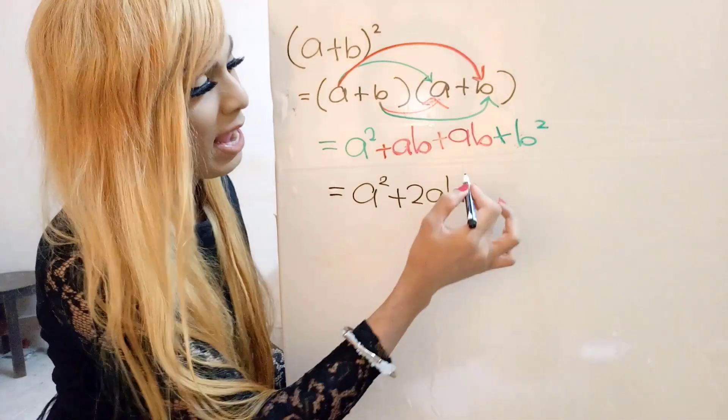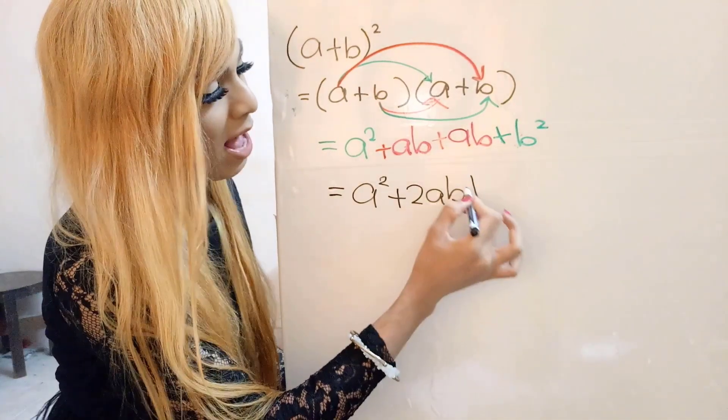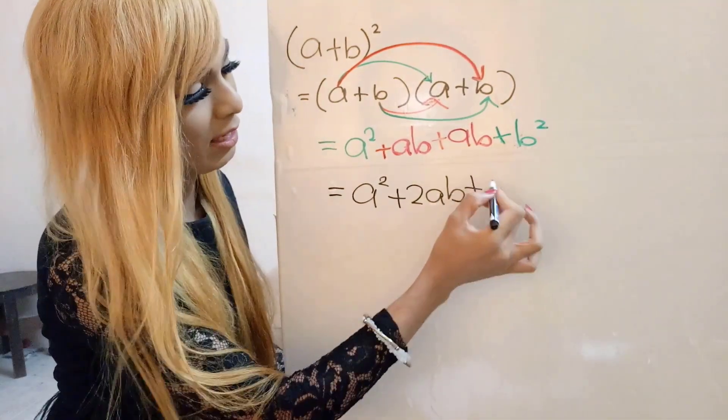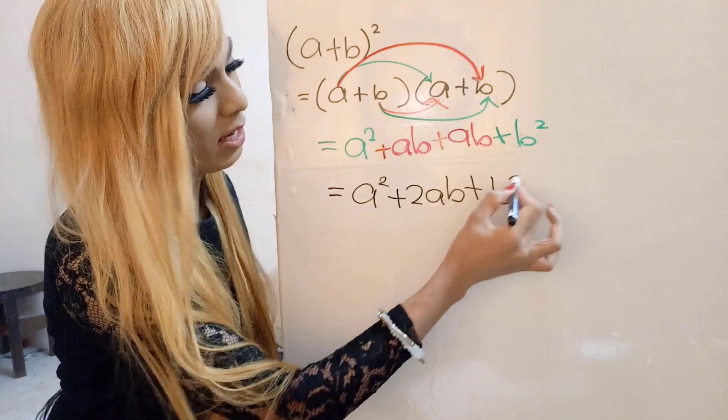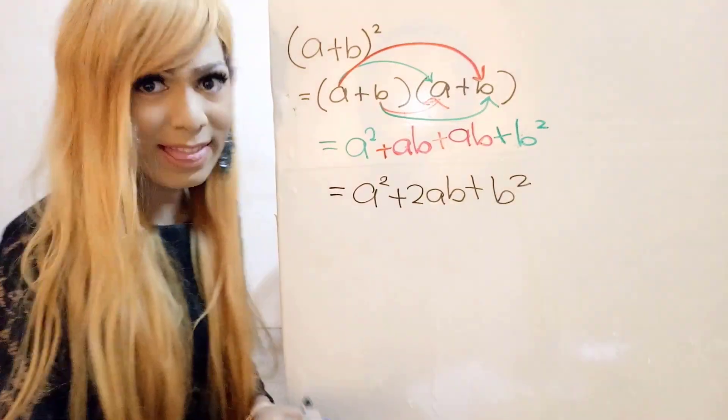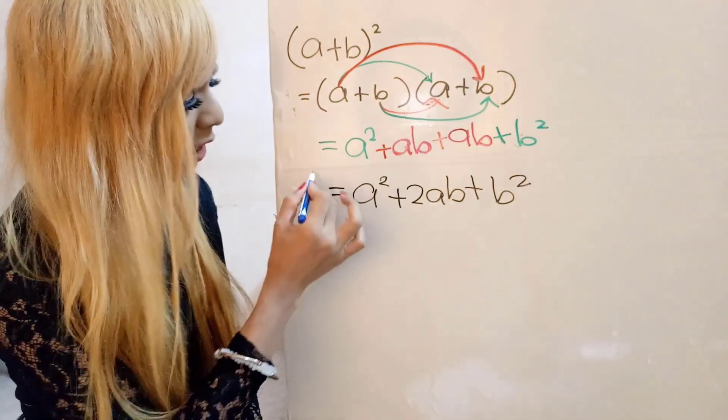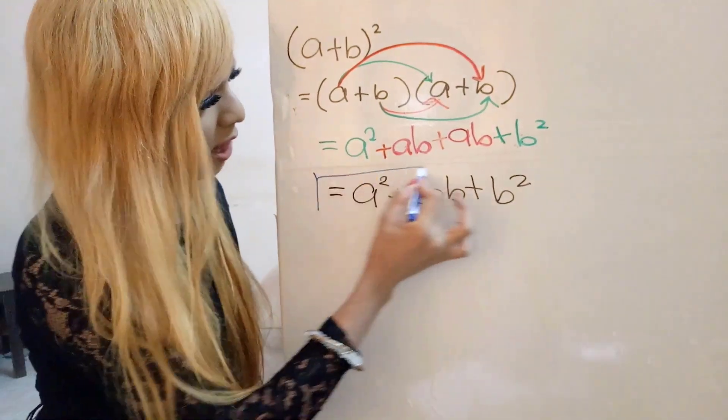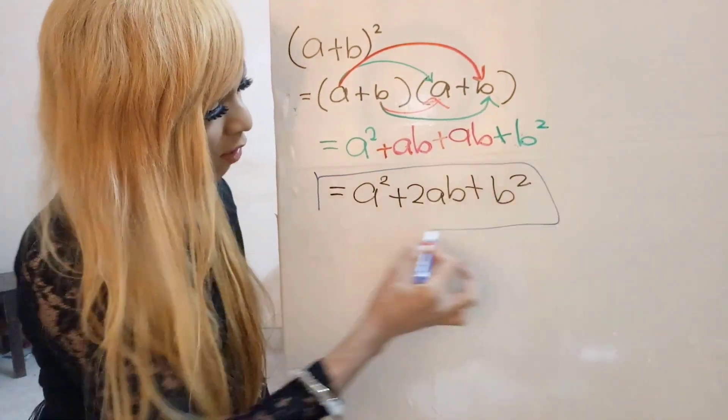So the final result is a squared plus 2ab plus b squared. This is the binomial formula.